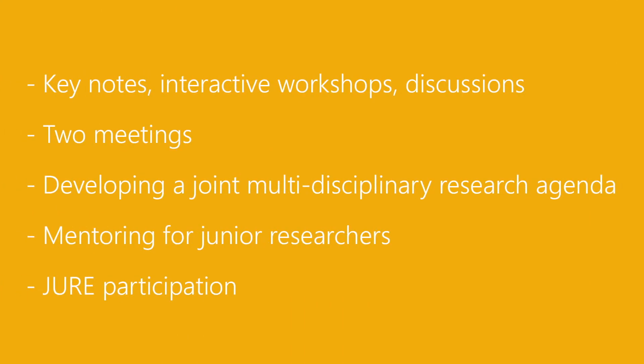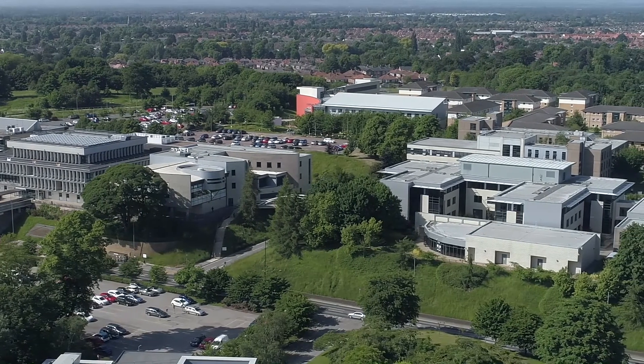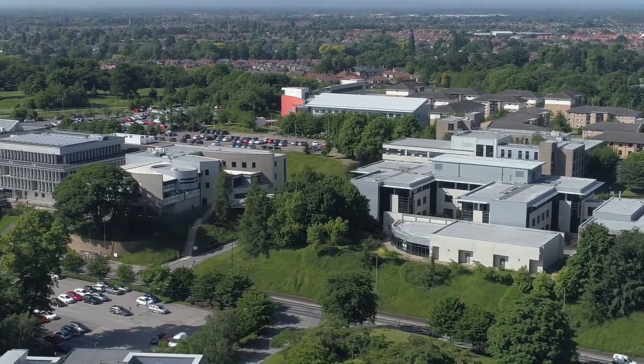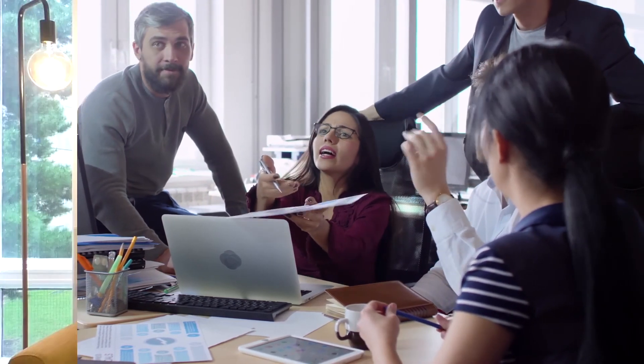Our emerging field group will consist of experts in education and related fields and junior researchers that aspire to become experts, with a one-to-one ratio between experts and junior researchers. We will have keynotes from the experts to frame our two meetings — the first one in Jörg and the second one in Vienna. We will also have one-to-one mentoring between experts and junior researchers, and data workshops focusing on methodological approaches to model students' heterogeneity in the perception of instruction quality.